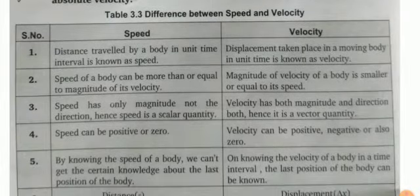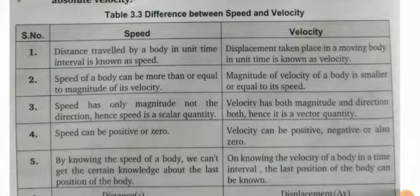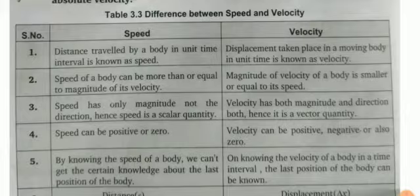Difference between speed and velocity. First point: distance travelled by a body in unit time interval is known as speed. But in velocity, displacement taken place in a moving body in unit time is known as velocity.